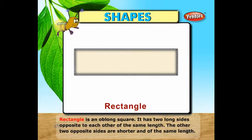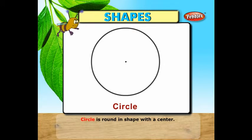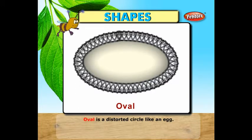It has two long sides opposite to each other of the same length. The other two opposite sides will be shorter and of the same length. A circle is round in shape with a center. An oval is a distorted circle like an egg.